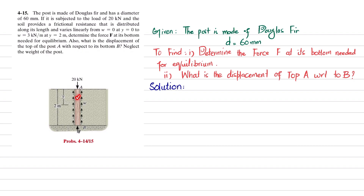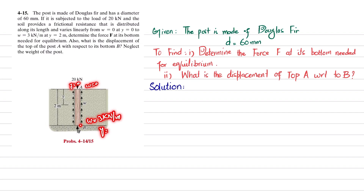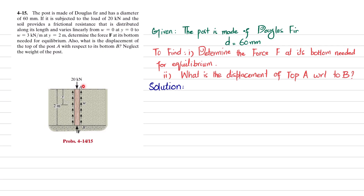You can see this is the post made of Douglas fir — that is a tree. There is a load of 20 kilonewtons at the top and there is a uniformly increasing load w offered by the soil on this post. This w equals zero at y equals zero and w equals 3 kilonewtons per meter at y equals 2 meters. We have to find the force from the bottom of the post, and we will also find the displacement of point A with respect to point B.